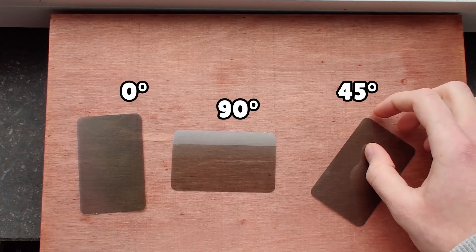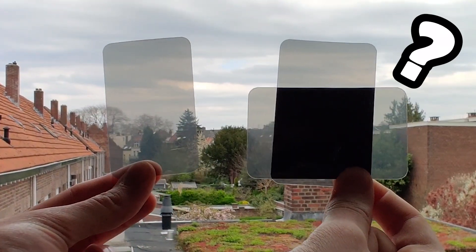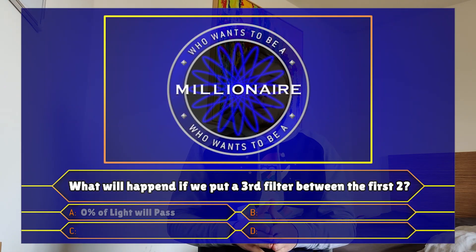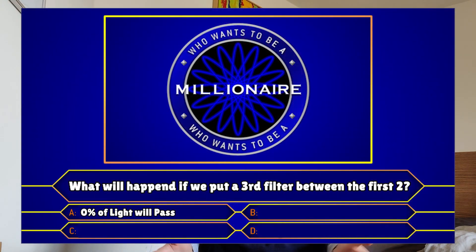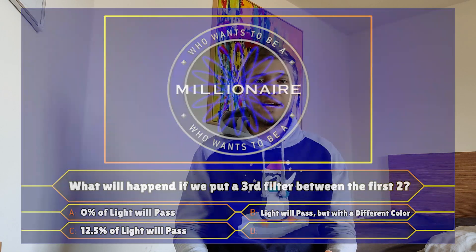But now the tricky part comes. What will happen if I take a third filter — similar to the first two — but this time rotate it 45 degrees and place it between the other two filters? Answer A: nothing will happen and no light will pass through. Answer B: the color of the filter will change. And answer C: the filter will pass only 25% of the incoming light. I want you to pause the video and write down your prediction in the comments below.